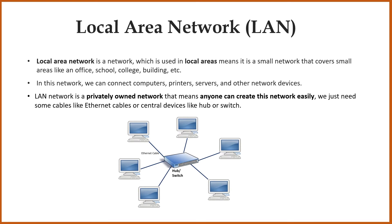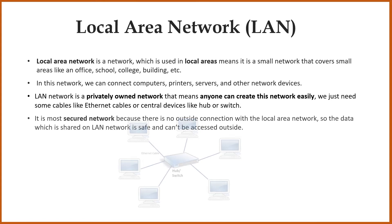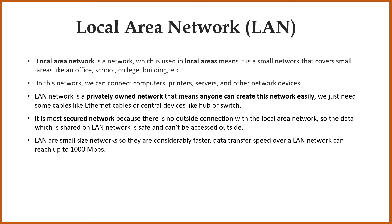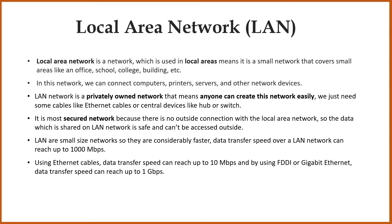To create a LAN network, we just need some Ethernet cables and a central device like a hub or switch. It is mostly a secured network, because there is no outside connection with the local area network, so the data which is shared on a LAN network is safe and can't be accessed outside. LAN networks are small size networks, so they are considerably faster. Data transfer speed over a LAN network can reach up to 1000 megabits per second. Using Ethernet cables, data transfer speed can reach up to 10 megabits per second, and by using FDDI or gigabit Ethernet, data transfer speed can reach up to 1 gigabit per second.